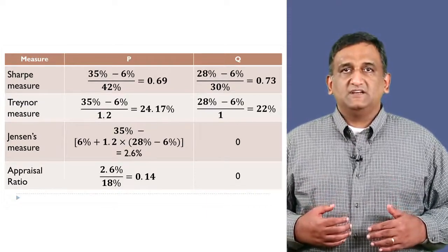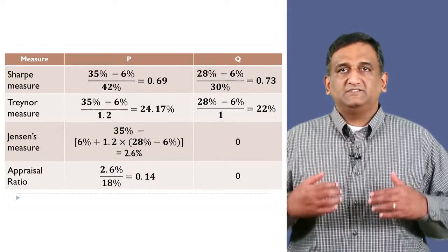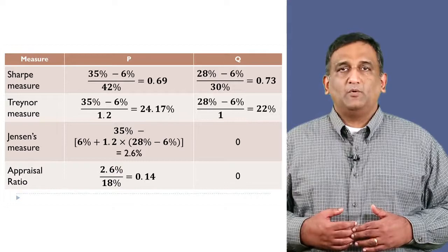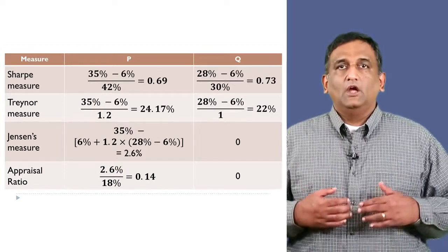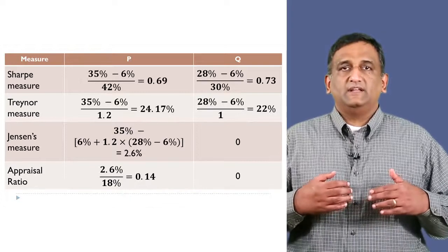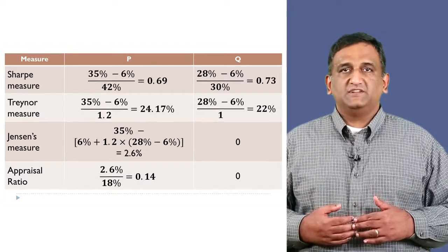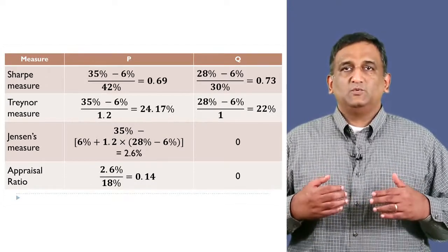P's Treynor measure is 35% minus 6% divided by 1.2, which is 24.17%. Q's Treynor measure is 28% minus 6% divided by 1, which is 22%.